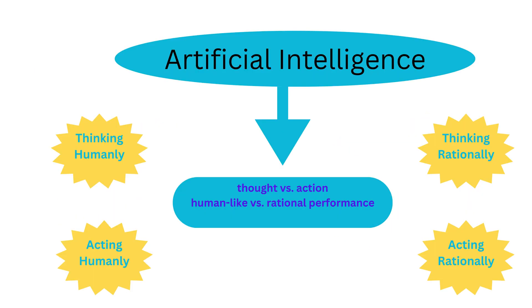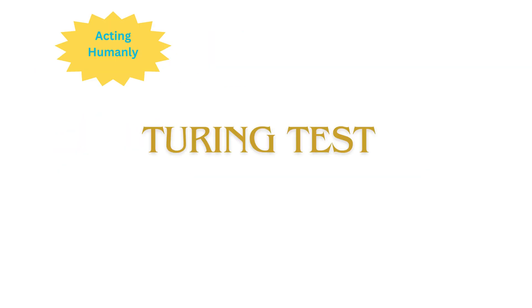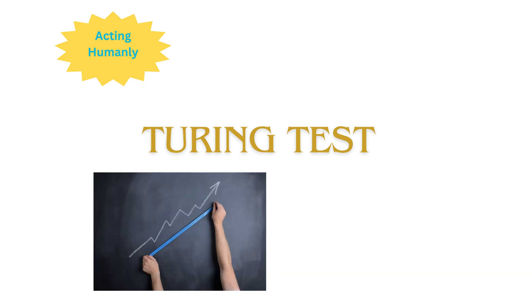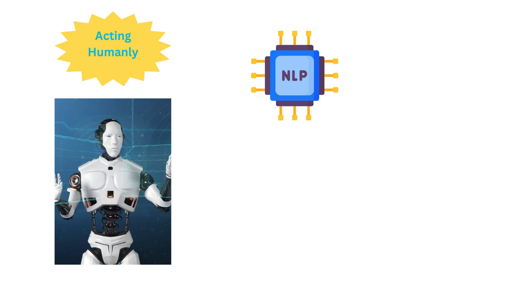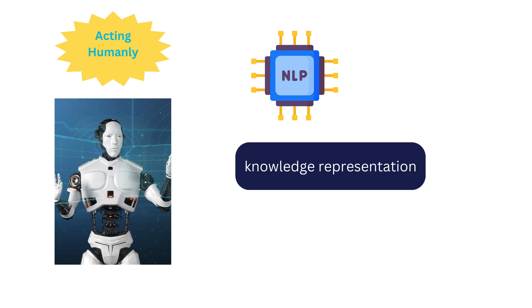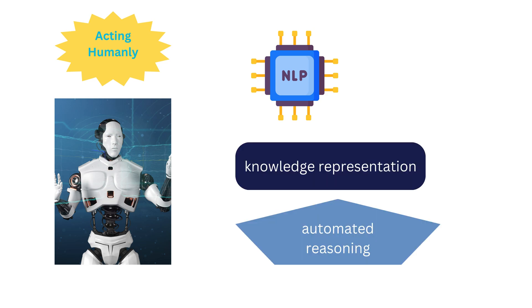In the realm of acting humanly, the Turing test serves as a benchmark, measuring AI's success by its indistinguishability from human behavior. To excel, an AI must master natural language processing, knowledge representation, and automated reasoning.